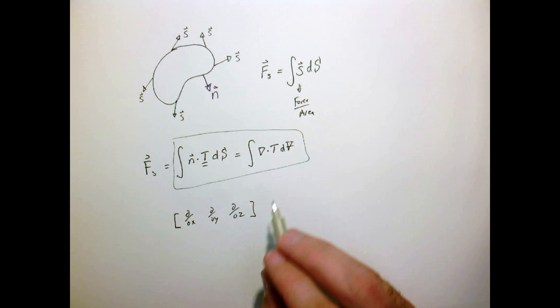So I'll write out the x, y, and z component of my del operator. And if I just simply do my vector matrix operation, I get,